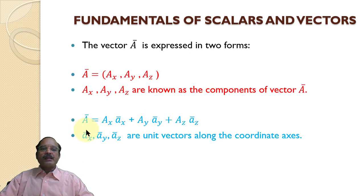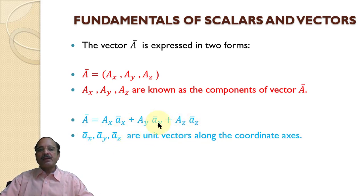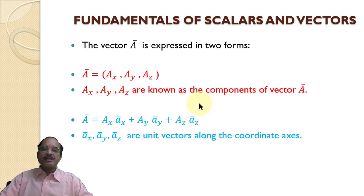Vector a can also be represented as ax·āx + ay·āy + az·āz, where āx, āy, and āz are the unit vectors that assign particular directions to these three components.